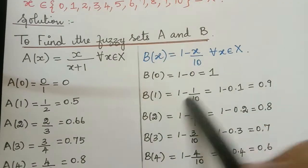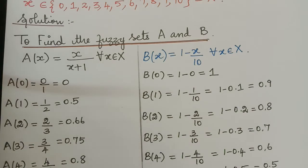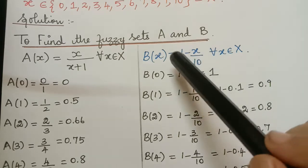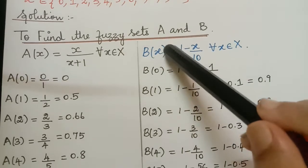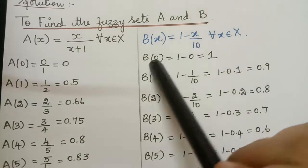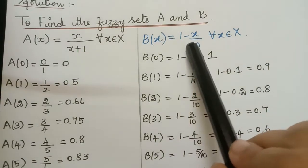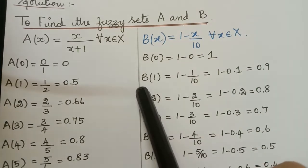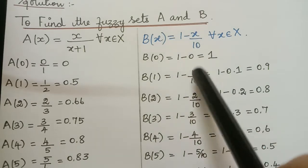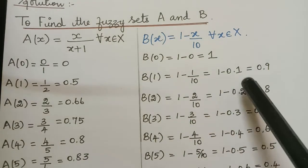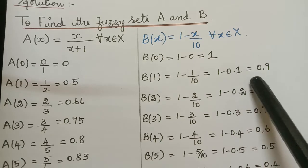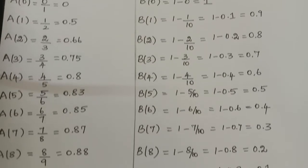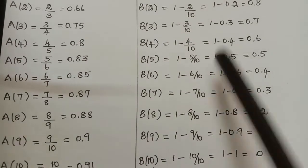Next we have to find the membership function for B(x), which is given as B(x) = 1 - x/10. The membership values are obtained by substituting x from 0 to 10 one by one. When we substitute x = 0 we get 1 - 0/10 = 1. B(1) = 1 - 1/10 = 1 - 0.1 = 0.9. In a similar way we find till B(10), and we have those values here.